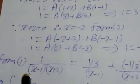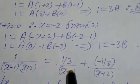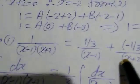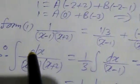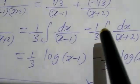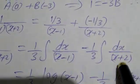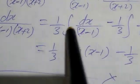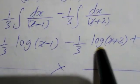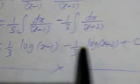Now I will put these values back in equation 1: 1 upon (x minus 1)(x plus 2) equals (1/3) upon (x minus 1) plus (minus 1/3) upon (x plus 2). Applying integration on both sides, the integral of dx upon (x minus 1)(x plus 2) equals (1/3) log(x minus 1) minus (1/3) log(x plus 2) plus C. That is the answer.